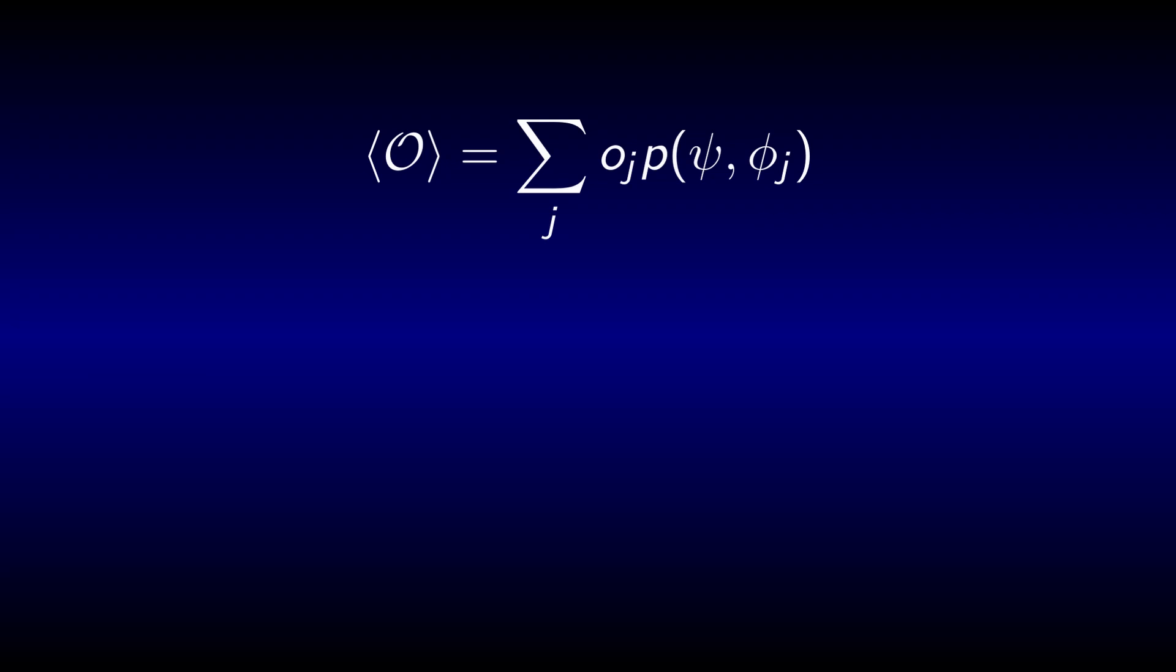My video on measurement ended on the notion that the expectation value of an operator corresponding to a measurable quantity can be written as the sum of the probabilities that the system will collapse to an eigenstate of that operator multiplied by the corresponding eigenvalue. The probabilities are given by the absolute squared of an integral. Our goal here is to significantly simplify these expressions.